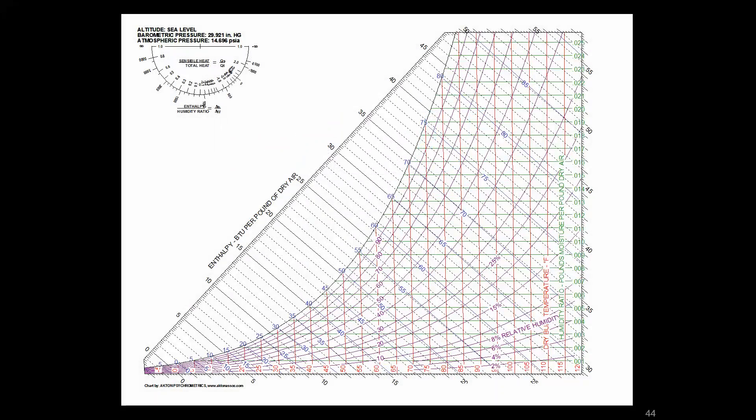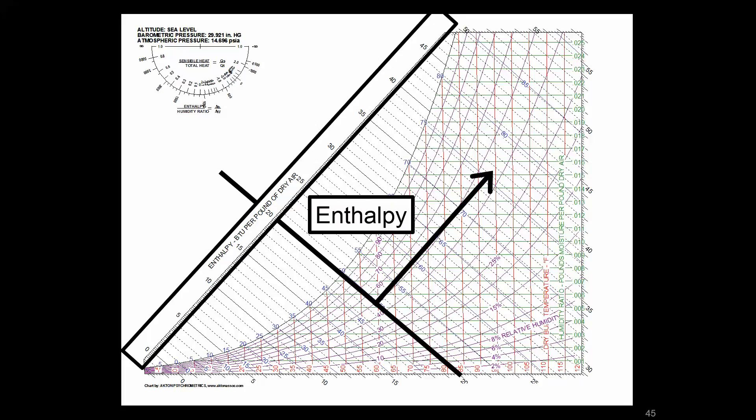We talked last time about how the psych chart was put together, what the labels mean, what the axes represent, and we left off with enthalpy, which is really the last axis that we're going to discuss. But it has a fair amount of importance as it's really the only representation of energy that we have on the psych chart. It's going to be critical when we talk about load sizing and estimating the energy usage involved with different processes.